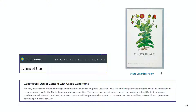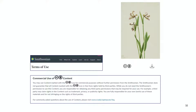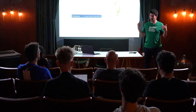The Smithsonian created two different license designations. Sometimes they refer to 'user conditions apply,' meaning they are not certain the work is in the public domain because they couldn't paper-trail it, so they advise against commercial use. But when you see the CC0 stamp, it means the work is in the public domain and you can do everything you want with it.